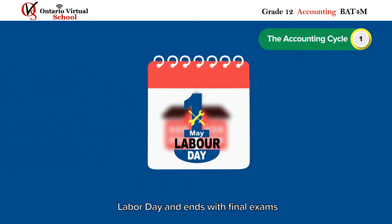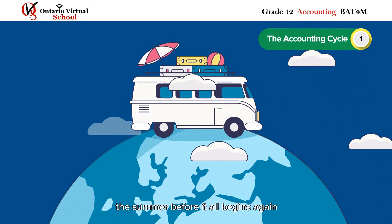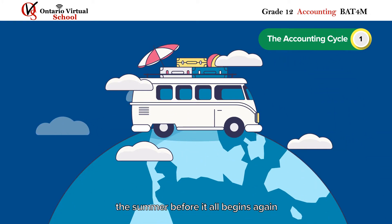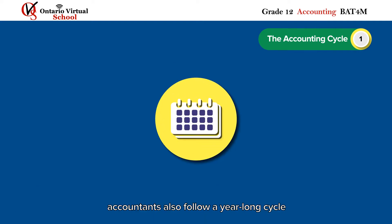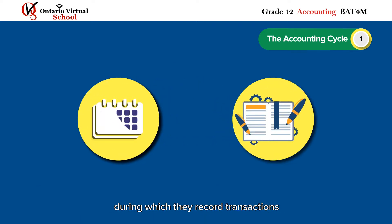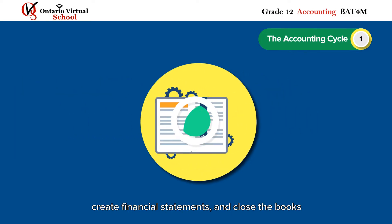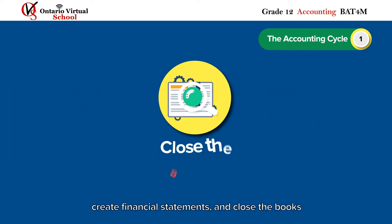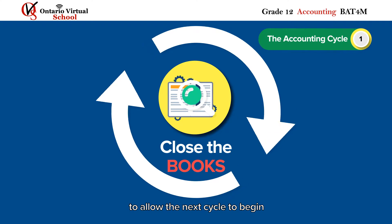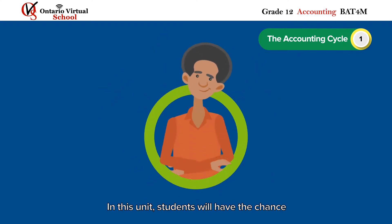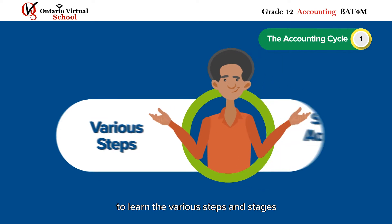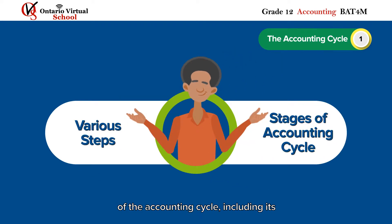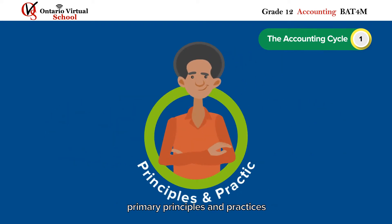As a seasoned student, you know the drill — each school year begins the day after Labor Day and ends with final exams, at which point you're home free for the summer before it all begins again. Well, much like you, accountants also follow a year-long cycle during which they record transactions, create financial statements, and close the books to allow the next cycle to begin. In this unit, students will learn the various steps and stages of the accounting cycle, including its primary principles and practices.